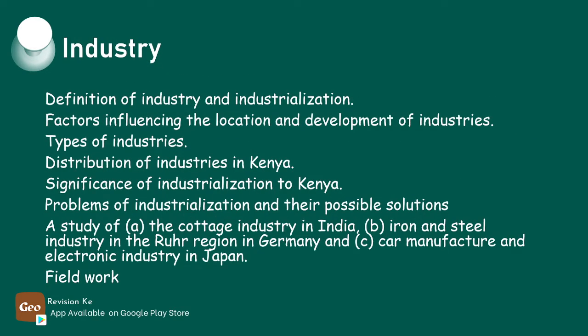Having defined that, we are now in a position to explain the factors that influence the location and development of industries, describe types of industries, account for the distribution of industries in Kenya, explain the significance of industrialization to Kenya, and discuss the problems of industrialization and suggest possible solutions.